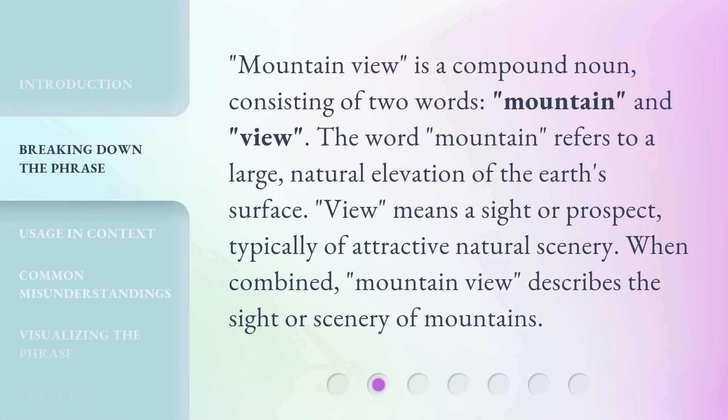Mountain View is a compound noun consisting of two words: mountain and view. The word mountain refers to a large, natural elevation of the Earth's surface. View means a sight or prospect, typically of attractive natural scenery. When combined, Mountain View describes the sight or scenery of mountains.